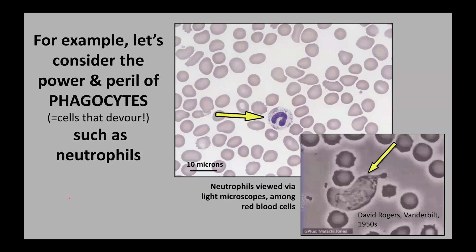For example, let's consider the power and the peril of phagocytes, such as neutrophils. Phagocyte means cells eating — cells that devour — and neutrophils are a prime example of phagocytes that we deploy in our immune systems. These are a couple of views down the light microscope of neutrophils.